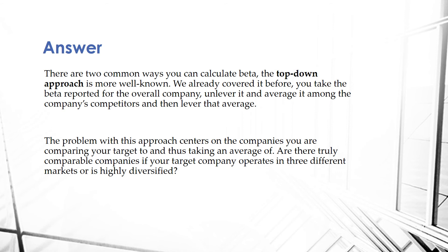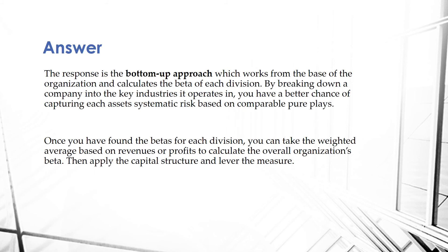The question is: are there truly comparable companies if your target operates in three different markets — say, the TV space, the mining space, and the food business? If you unlever the beta and compare it only to food distributors, is that really a good comparison? Because the company still has exposure to the TV market and the mining industry. For highly diversified companies, going top-down and comparing the overall beta to one certain group has a weakness that makes it very difficult to defend your assumptions. The response is the bottom-up approach, which works from the base of the organization and calculates the beta for each division, giving a better chance of capturing each asset's systematic risk based on comparable pure plays.